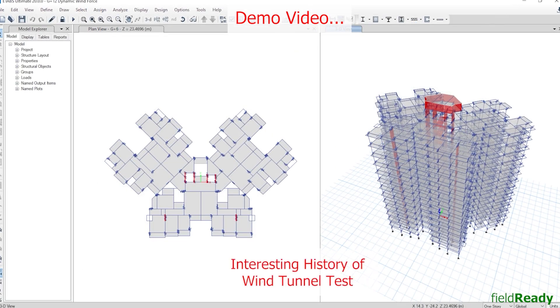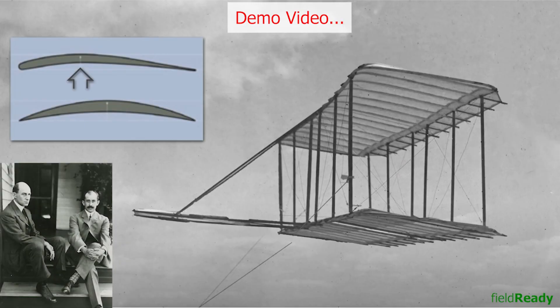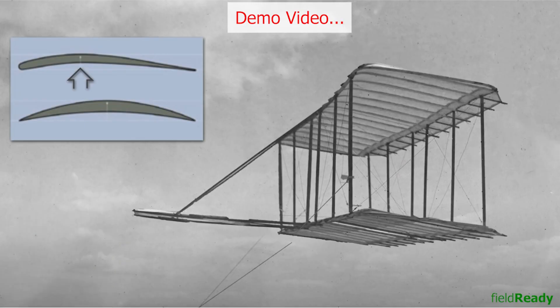Any guess who did the first commercial wind tunnel test and on what model? It were the Wright Brothers who invented the first motorized flying aircraft. The problem they were receiving was that their designed aircraft wings were not able to generate enough lift for it to sustain in the air, so they took help of the available wind tunnel at that time.